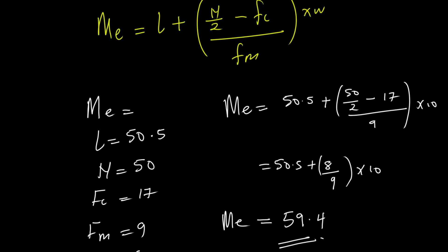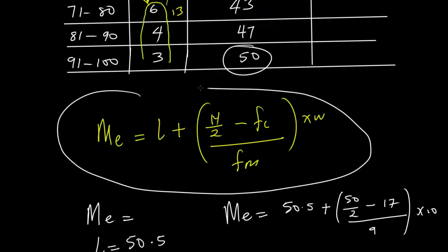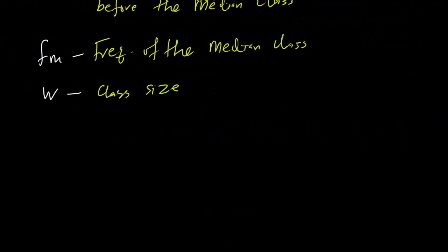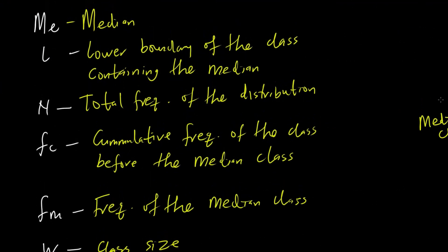Using the interpolation formula, we have estimated the median to be 59.4. This is how we can use the interpolation formula to estimate the median. In the next tutorial, we're going to be looking at how we can estimate the mode using the interpolation formula. If you find this tutorial useful, please subscribe, like, and share with anyone who needs it. See you in the next tutorial.